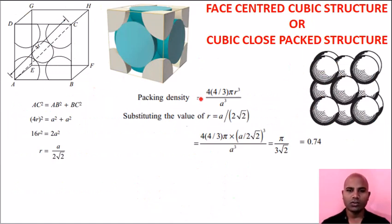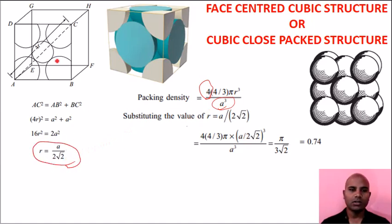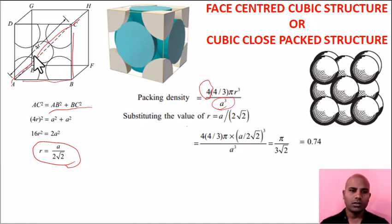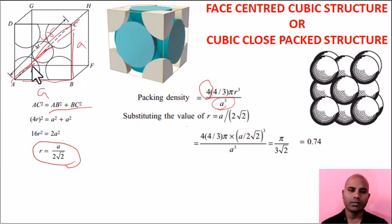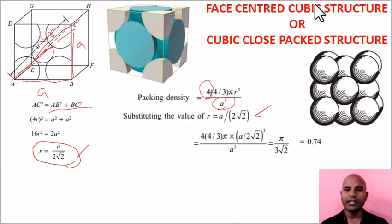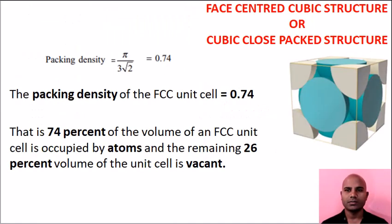For packing density of FCC: number of atoms = 4, volume of atom = 4/3 π r³, volume of unit cell = a³. Using Pythagoras theorem on the face: AC² = AB² + BC², which gives the relationship between R and A. Substituting into the packing density formula gives the result.